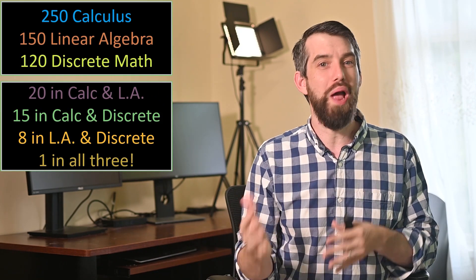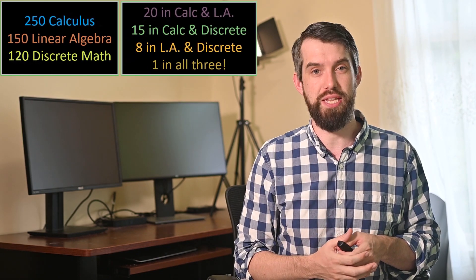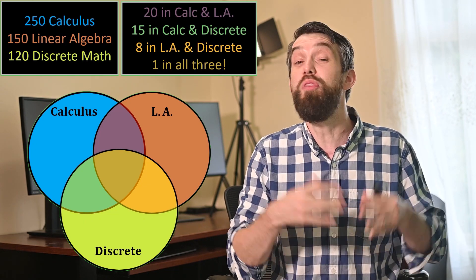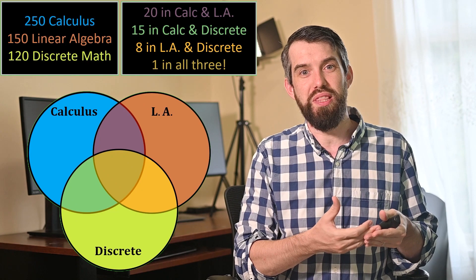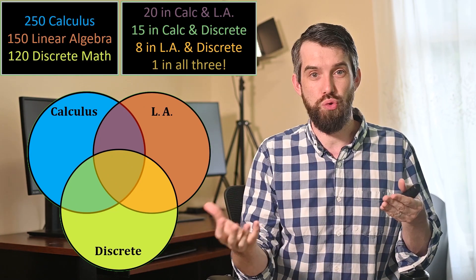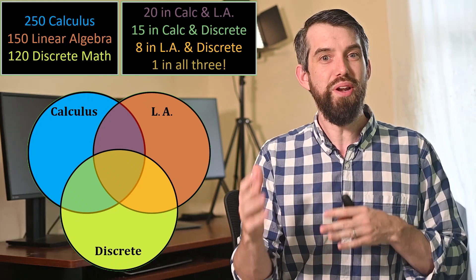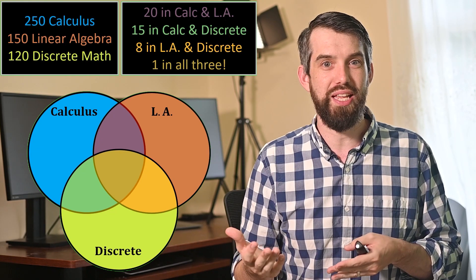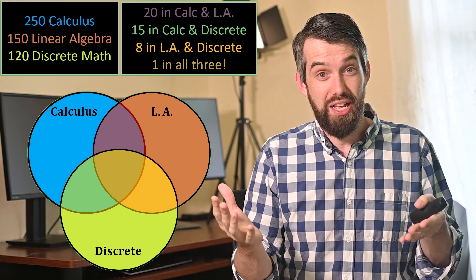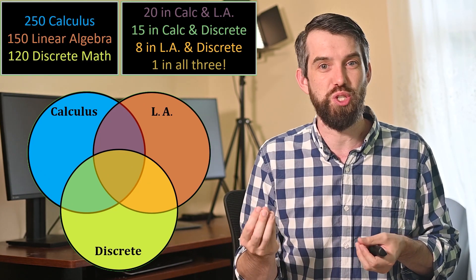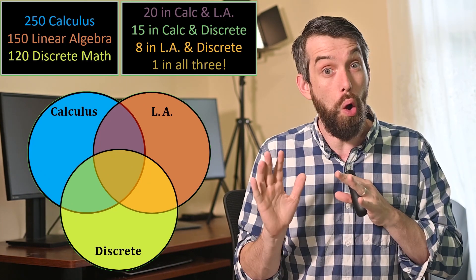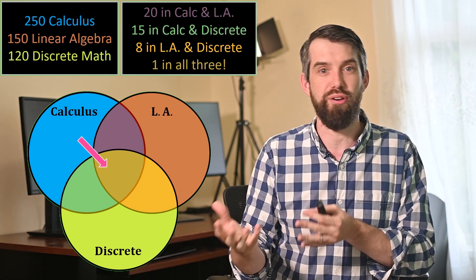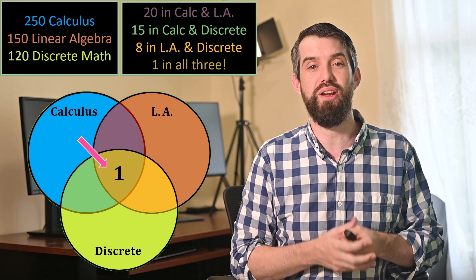There's a great pictorial way to visualize this with Venn diagrams. These circles represent the calculus students, the linear algebra students, and the discrete math students, respectively. They overlap, and the overlaps indicate students who are in both of two courses, or all three at once. I'm going to fill in this Venn diagram with appropriate numbers, working from the smallest numbers out. The smallest is the triple intersection — the student in all three — so I put that one student right in the very middle and fill it in with a one.